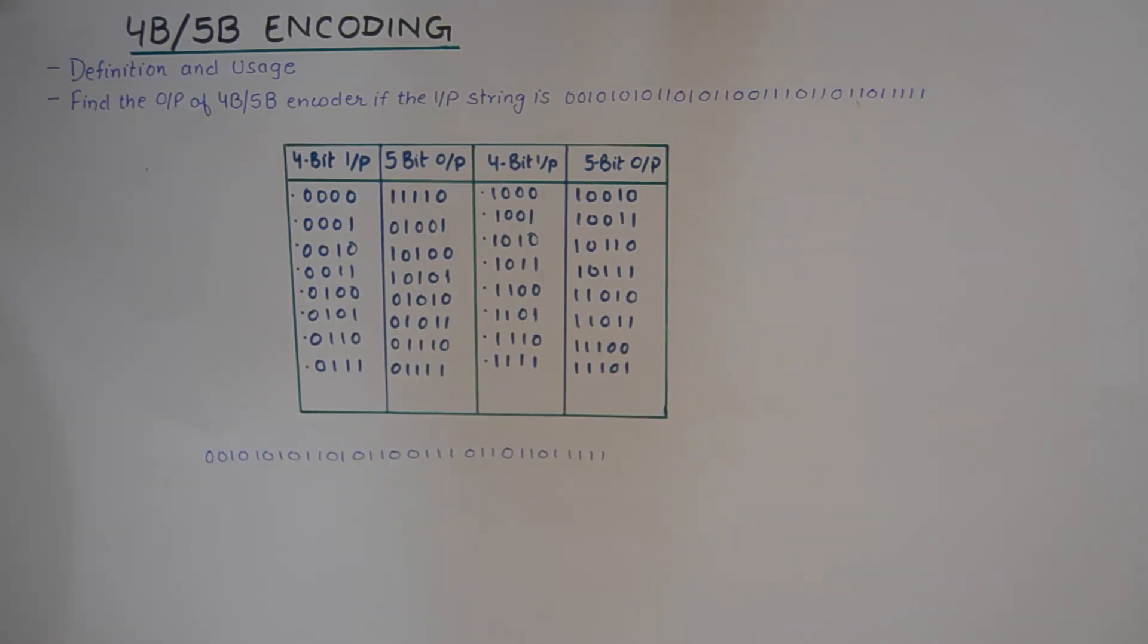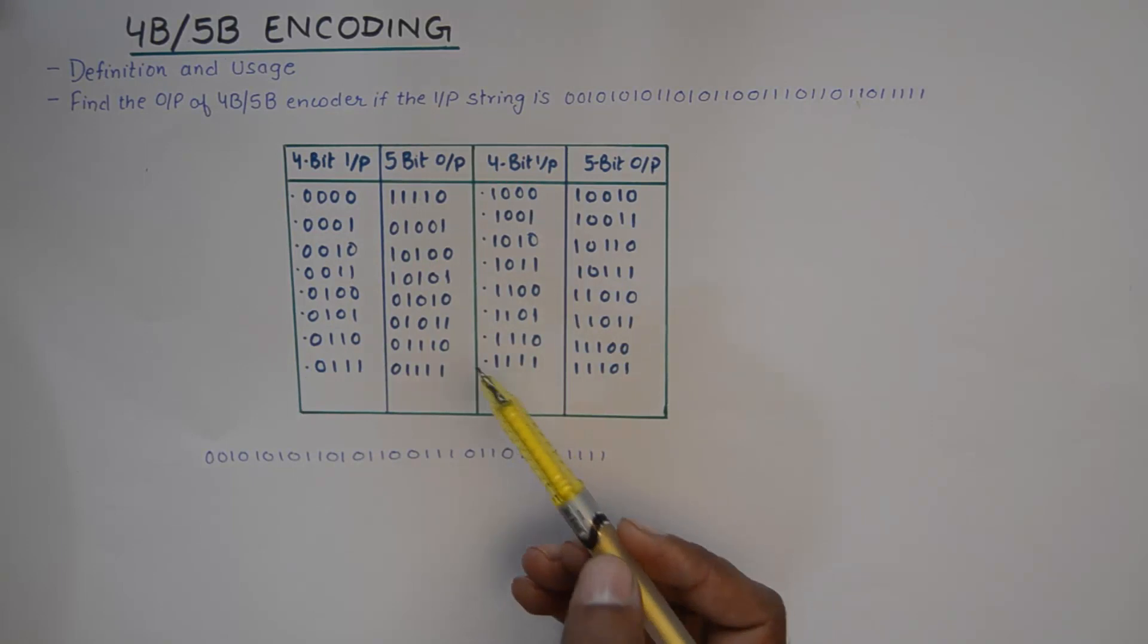So a long string of zeros could result in misinterpretation of a 0 DC voltage at the receiver. So that is avoided here.